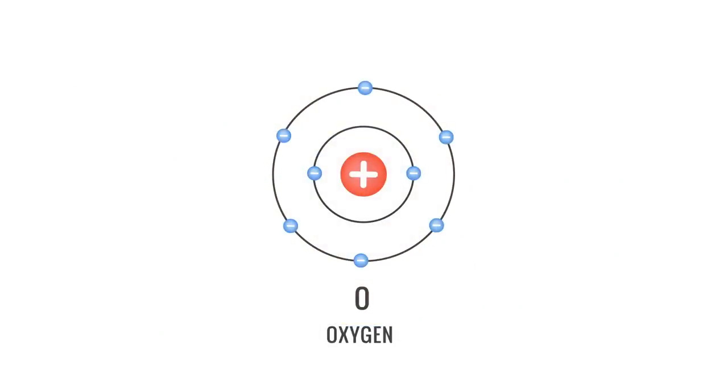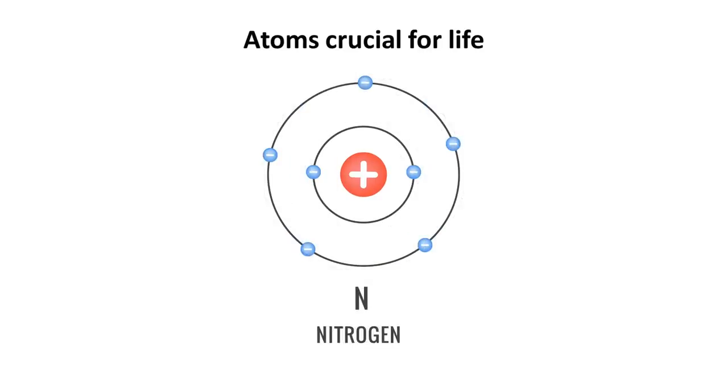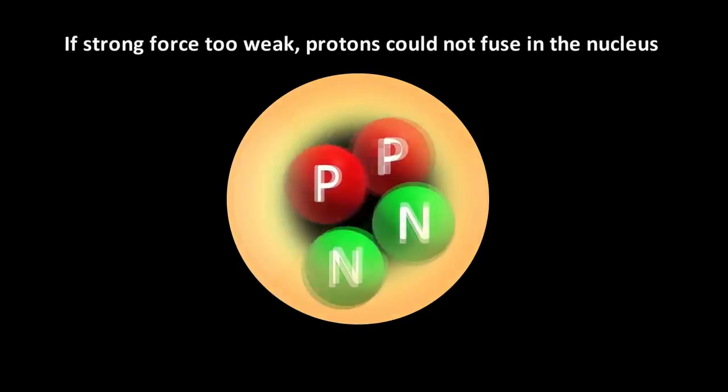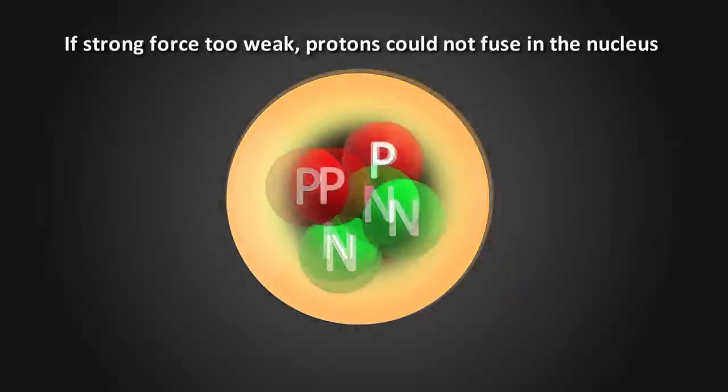If the strong nuclear force was only 1% weaker, for example, atoms crucial for life such as oxygen, carbon, and nitrogen may not form in sufficient quantities inside stars. Because this strong force would be too weak to keep the protons and neutrons bound together in the nucleus.